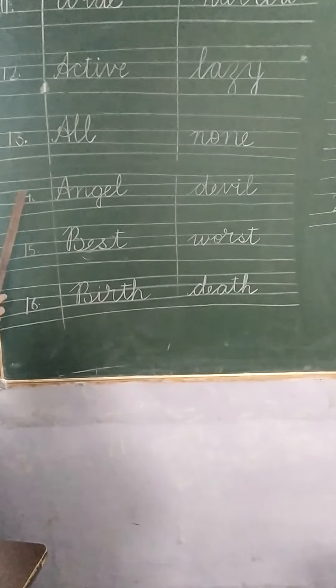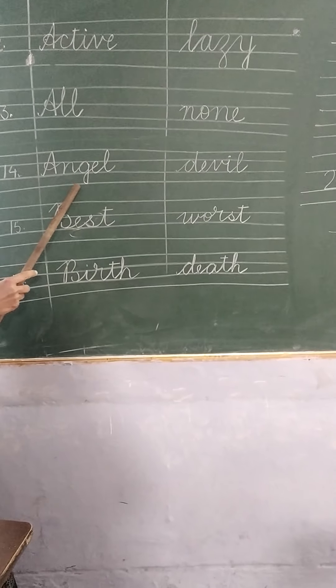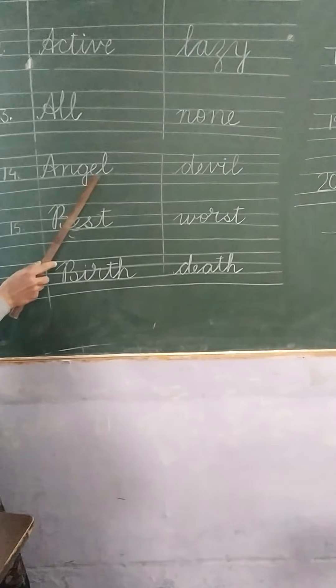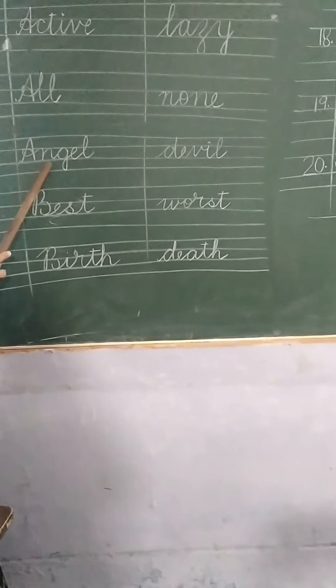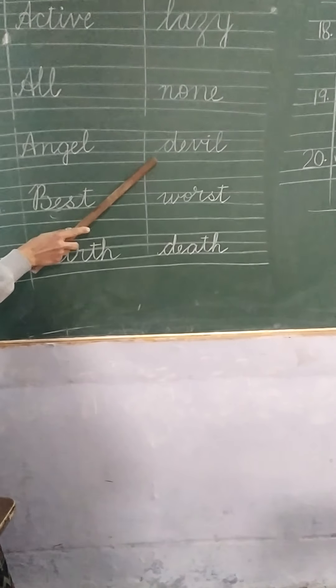Number 14. Angel. A-N-G-E-L angel. Opposite of angel is devil. Angel means good. Good person. Or devil means bad. D-E-V-I-L devil.